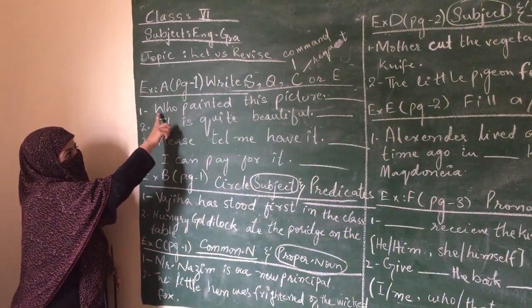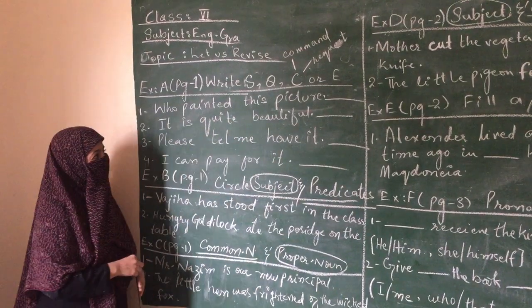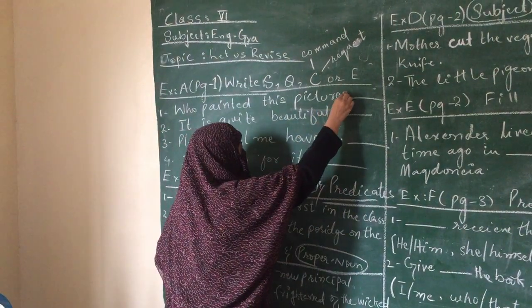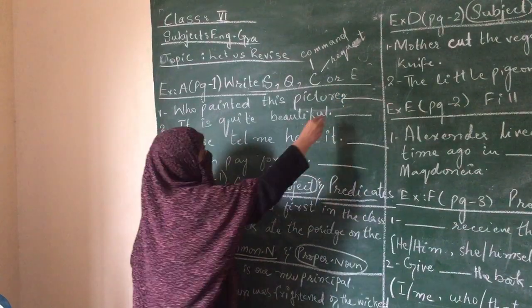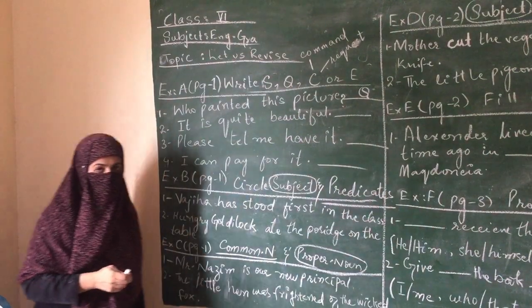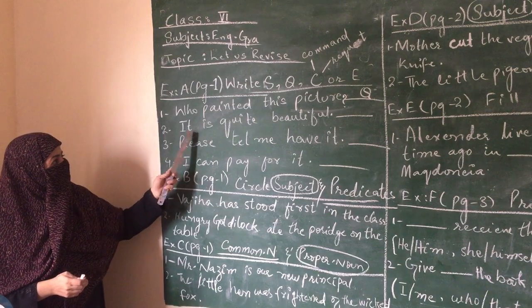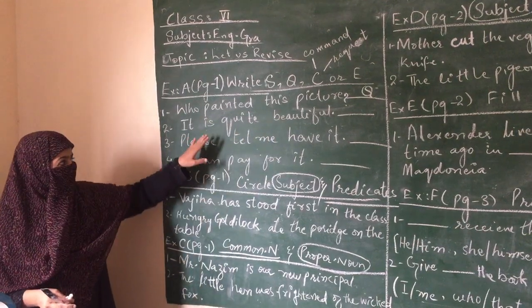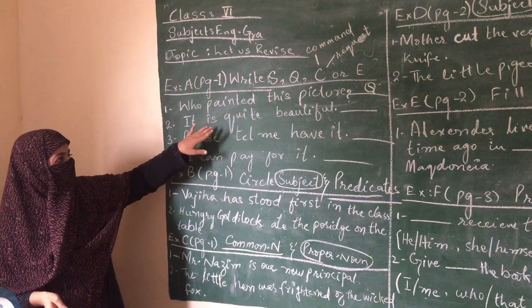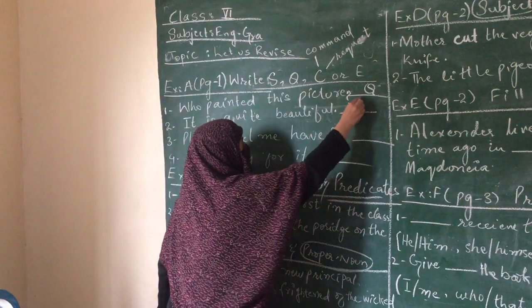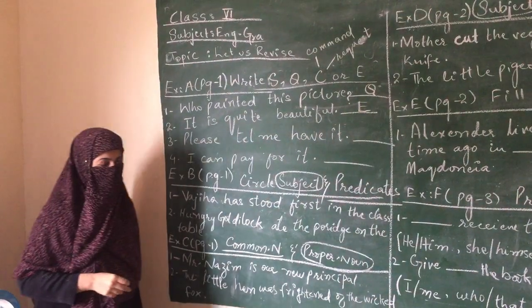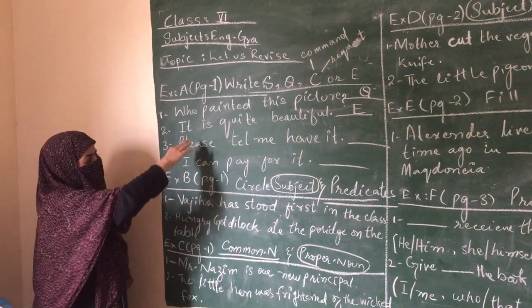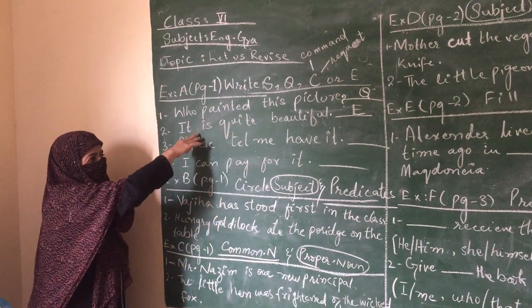Look here. First sentence: Who painted this picture? Actually it is a question. How beautiful. This sentence explains your feelings, so it is an exclamatory sentence. Write E in front of this sentence.